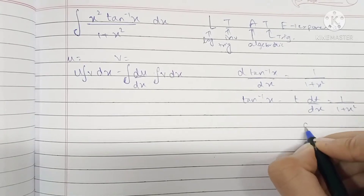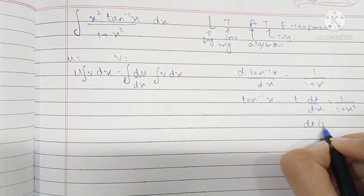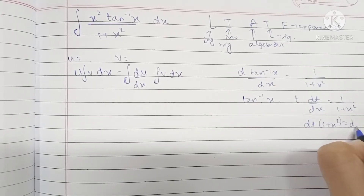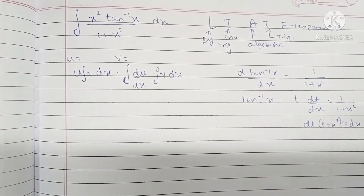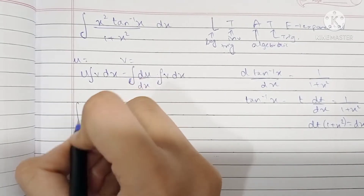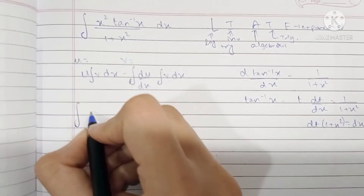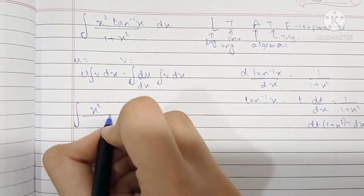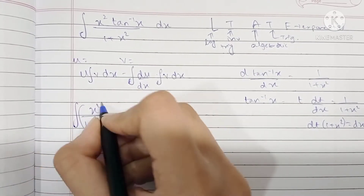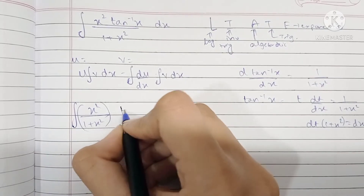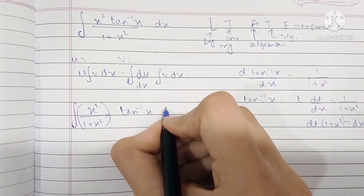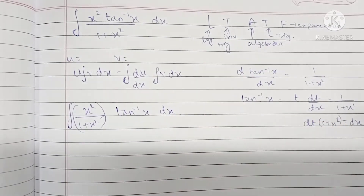So dt · (1 + x²) becomes dx. But before that, I'm going to write this as a separate fraction: x²/(1 + x²) · tan⁻¹(x), which is the same as what we have in the question.